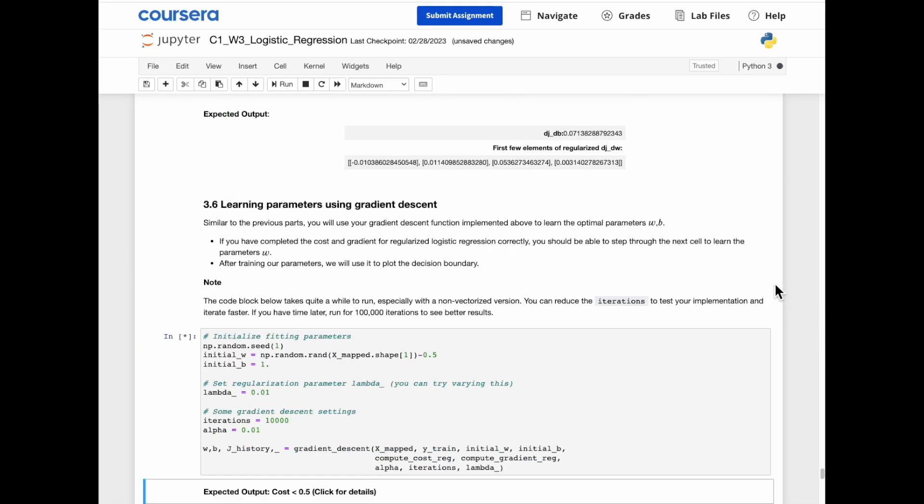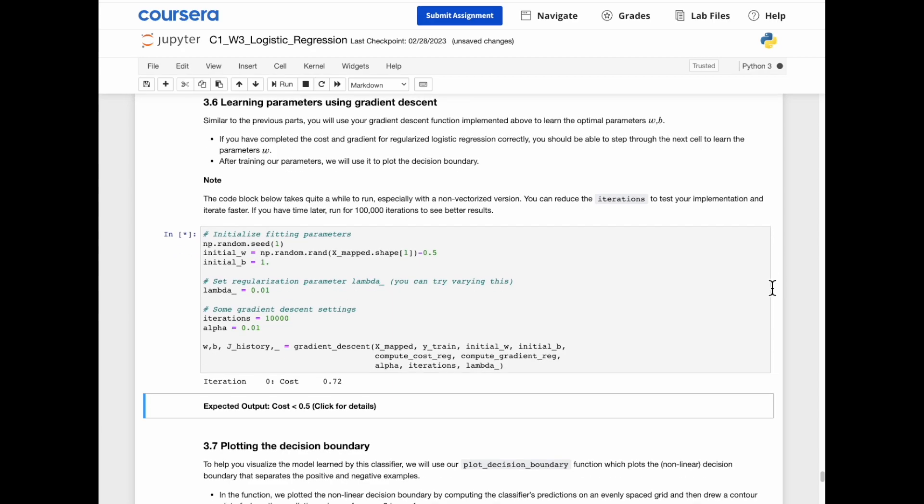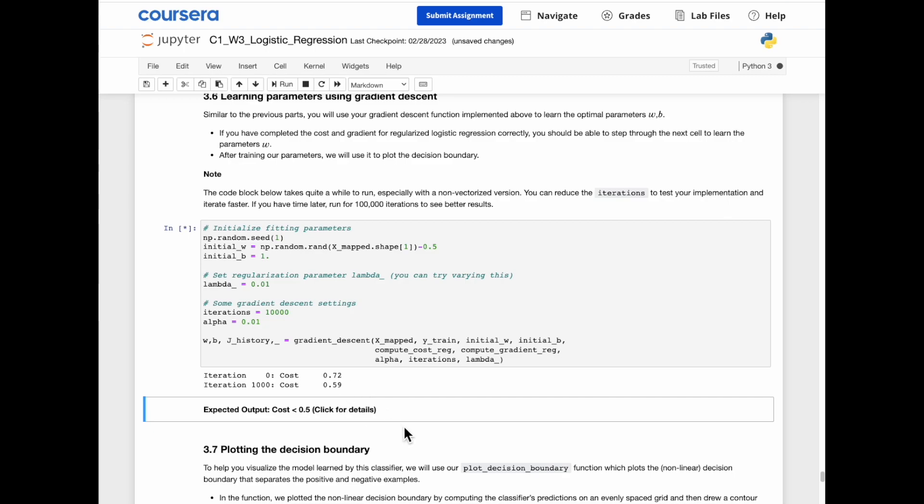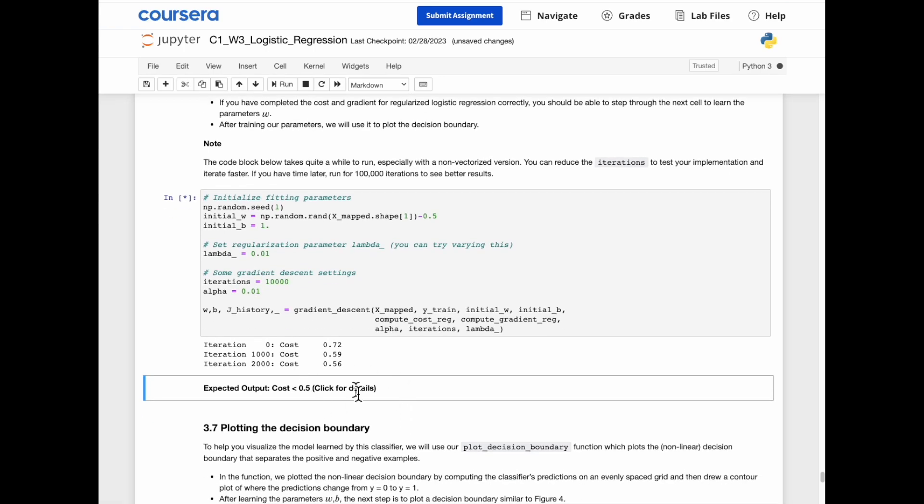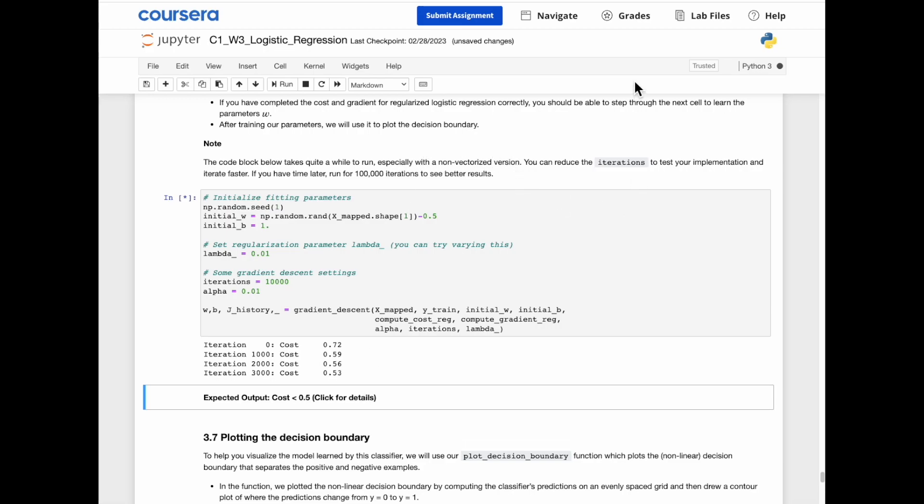Now learning parameters using gradient descent. We are going to see if the cost function is going down with the number of iterations. And the code is running a while because we are using a non-vectorized version like the above. That's why it was running kind of slow.